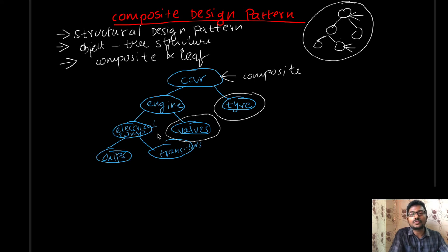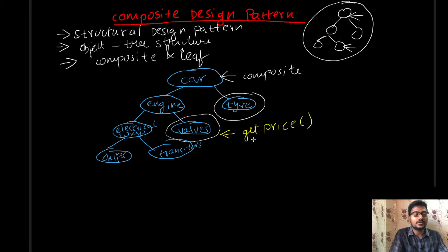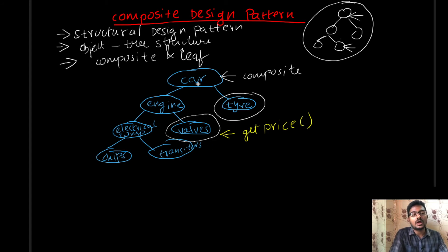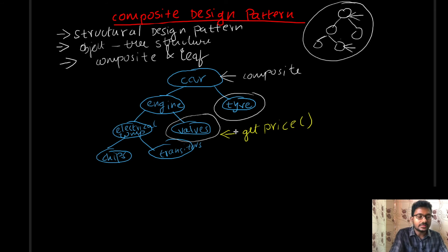If you perform some operation on the child objects — for example, 'get price' — this operation can be applied on transistor objects, chips objects, valves, and tires. Since the get price operation is applied on all leaf objects, that operation should also apply on the composite objects: car, engine, and electrical component. So you can get the price of transistors, chips, valves, tires, engines, electrical components, and cars.